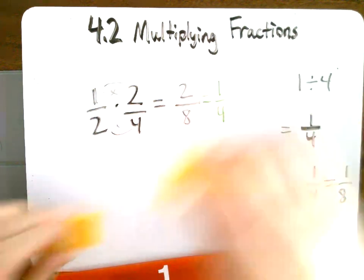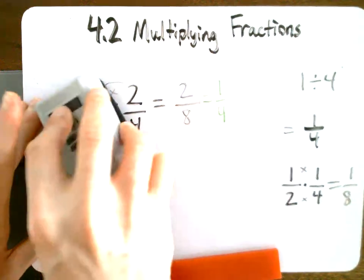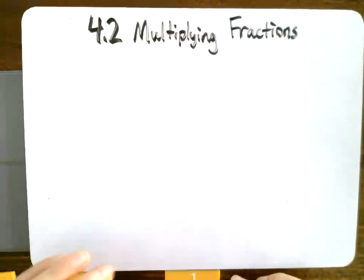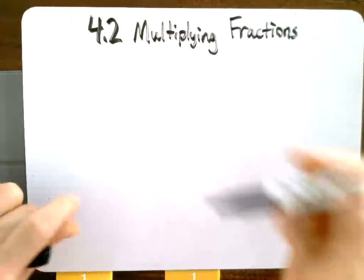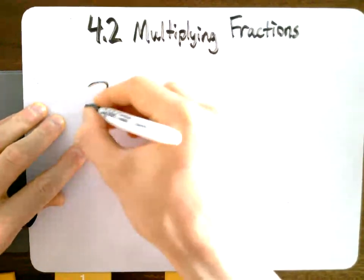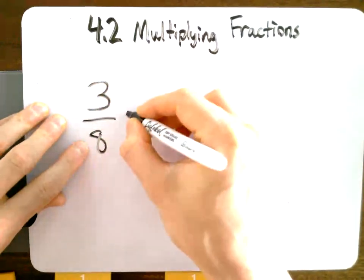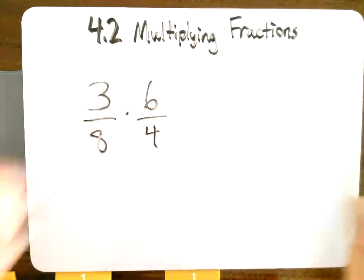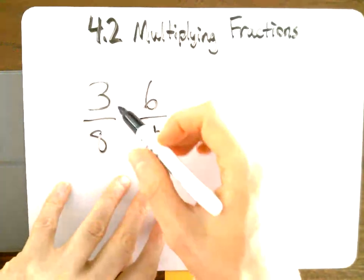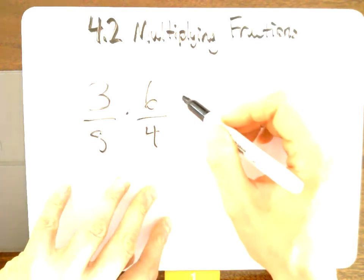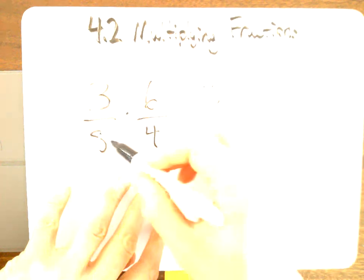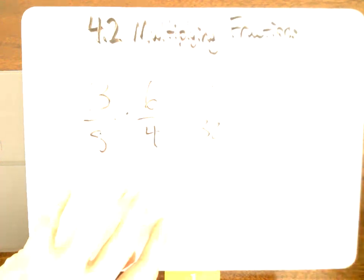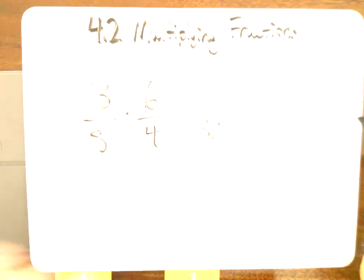So let's look at a couple more examples. Now that you get the concept, hopefully, you can use this rule for multiplying any fractions. So 3 eighths times 6 fourths. Even if it's an improper fraction, it still works. Multiply across the top. 3 times 6 is 18. Multiply the denominators. 8 times 4 is 32.